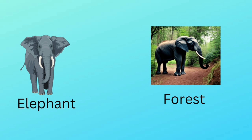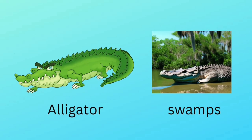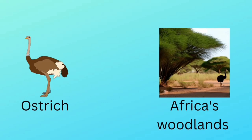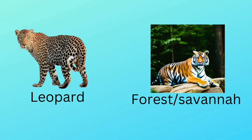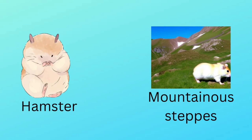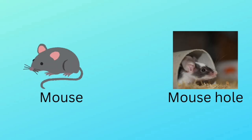Elephant lives in forest. Alligator lives in swamps. Ostrich lives in Africa's woodlands. Jellyfish lives in the ocean. Some animals live in forest and savannah. Hamster lives in mountain steppes. Mouse lives in various habitats.